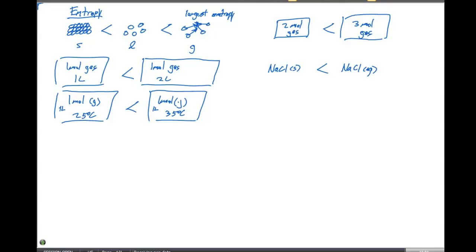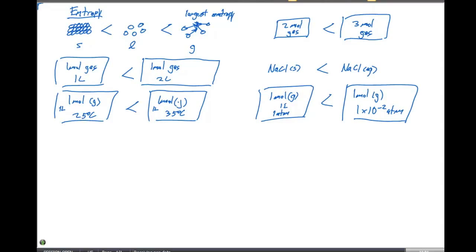We can also look at pressure effects. Let's assume we have one mole of gas in a one-liter container at one atmosphere. As we increase the pressure, think about what happens to our particles — as that pressure comes down, the particles are going to become more compact and more ordered. So if we compare these two, a larger entropy corresponds to a smaller pressure, such as 1×10⁻² atmospheres. When we decrease the pressure, the particles spread out, and we see a larger entropy.